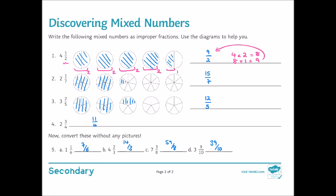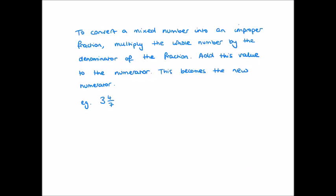And so let's look at the general technique. To convert a mixed number into an improper fraction, we multiply the whole number, the integer part, by the denominator of the fraction. We then add this value to the numerator and this becomes the new numerator, the numerator to our improper fraction. So let's for example take 3 and 4 sevenths. We're going to multiply the integer part by the denominator of our fraction. That's 3 times 7, which is equal to 21.